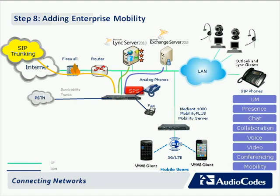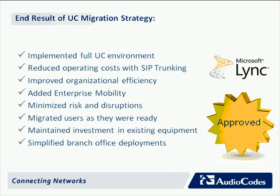Now we've implemented all the UC environments. To summarize the results of this migration strategy: we've reduced our operating costs by moving to SIP trunking, dramatically improved our organizational efficiency, added enterprise mobility, and minimized risks and disruptions by making this slow migration — making it easier on our employees and migrating users as they were ready rather than forcing a bold midnight switch. We've also maintained the investment in existing equipment, making a logical migration off of those PBXs, and simplified our branch office deployments.